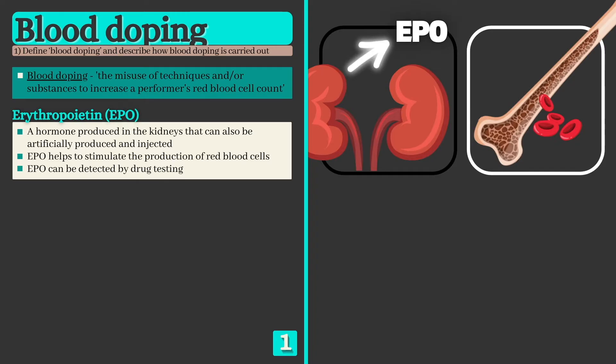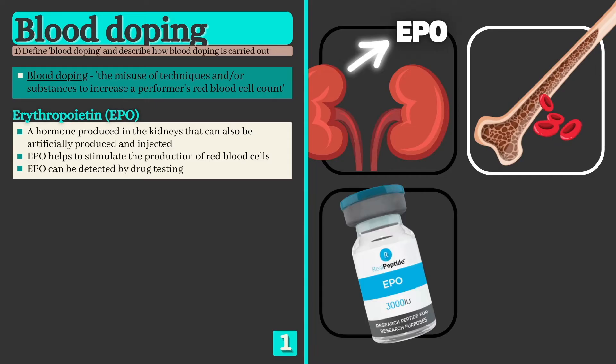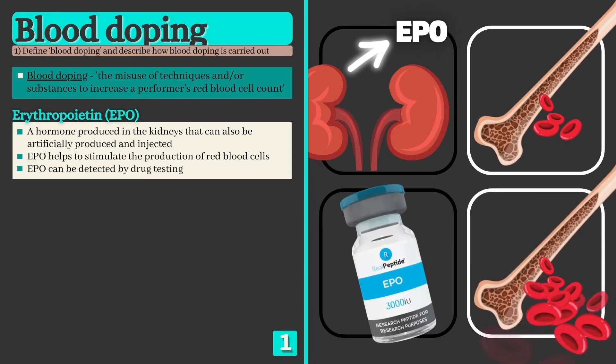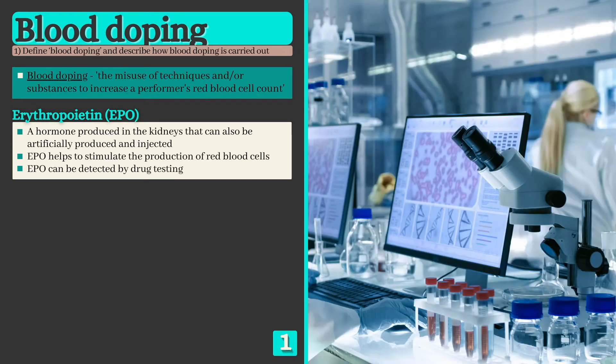The amount of EPO that we're able to produce ourselves is limited, however, meaning some athletes inject additional artificially produced EPO to further increase their red blood cell concentration. Due to advancements in drug testing, the presence of EPO can now be detected.